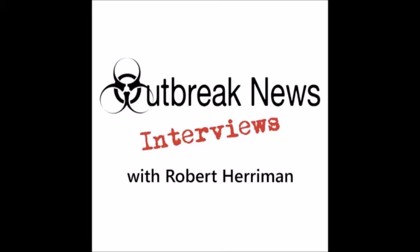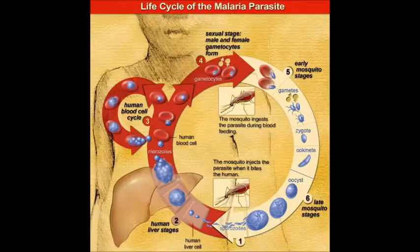Hey everybody, this is Robert, and welcome to Outbreak News Interviews. Malaria is probably the most important parasitic disease affecting humans. The parasite belongs to the class Sporozoa and the genus Plasmodium, a name which essentially means multinucleated mass.